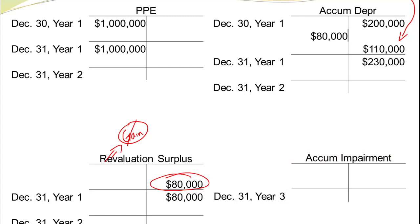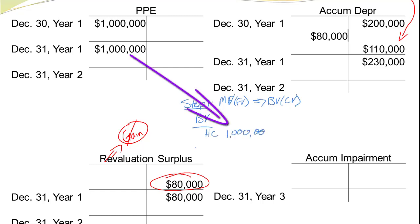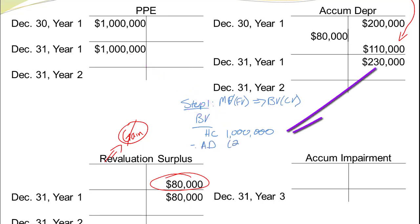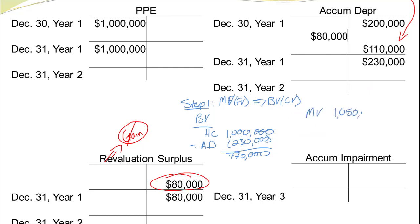In year two we have a new market value. Step one, just like before, is to compare the market value or fair value to the book value or carrying value. Our book value starts with historical cost of $1 million, minus accumulated depreciation of $230,000, giving us a book value of $770,000. Comparing that to the market value of $1,050,000, our value has risen by $280,000.